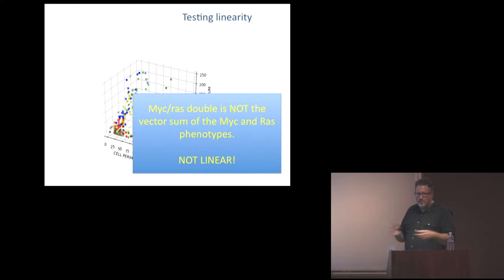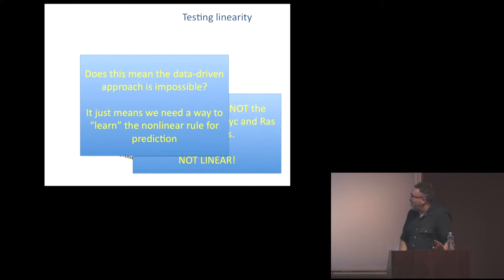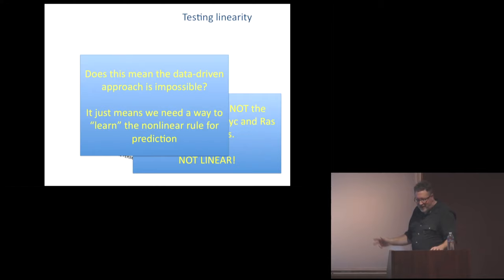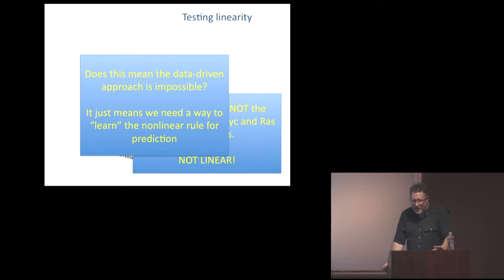This doesn't mean we're dead — it just means we need to learn how to combine perturbations. We're hoping to use machine learning to build a system that will actually predict what happens when you combine perturbations based on large numbers of experiments, which we can easily do. The question will become: do we have to do every single thing experimentally, or is there any predictability? We're also pursuing the model-driven approach in parallel — can we combine domain knowledge from those models with the data we have? Maybe the combination of the two would be more powerful than either approach by itself.